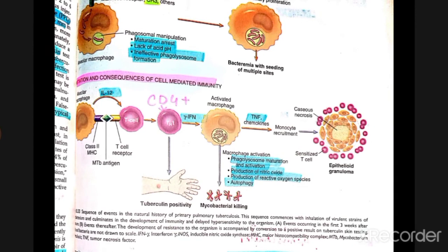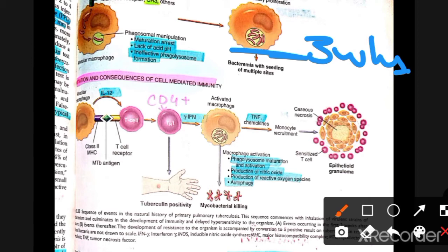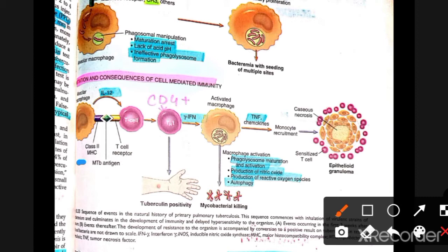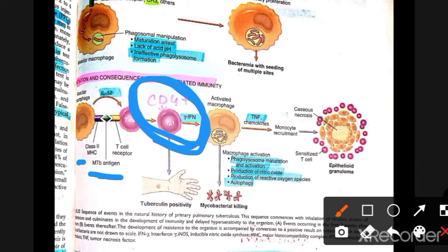About 3 weeks after infection, dendritic cells — which are antigen presenting cells — present the mycobacterial antigens to T cells. They present via MHC class 2 proteins, which interact with CD4-positive T helper cells, thereby activating cell-mediated immunity.